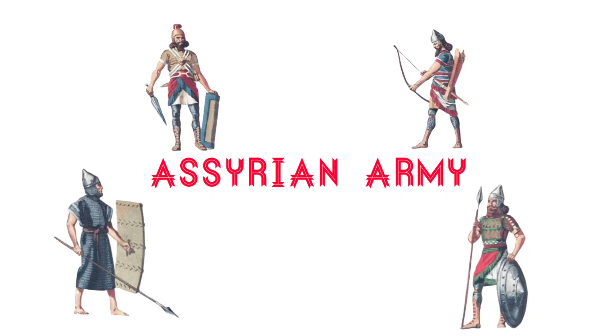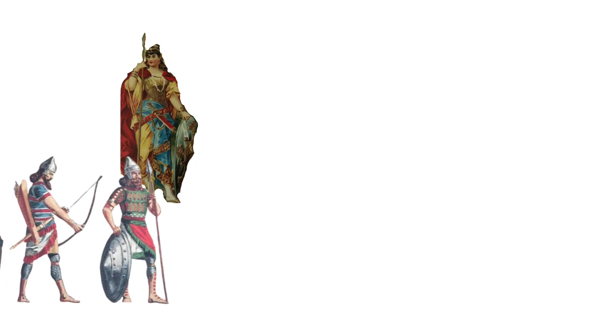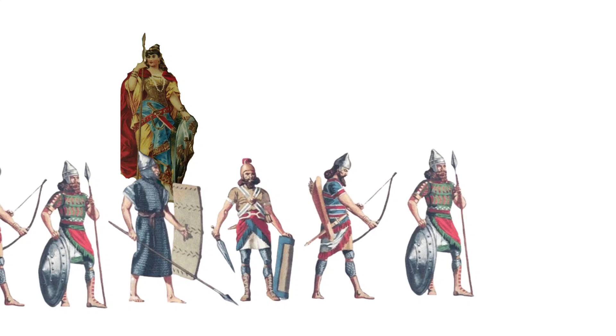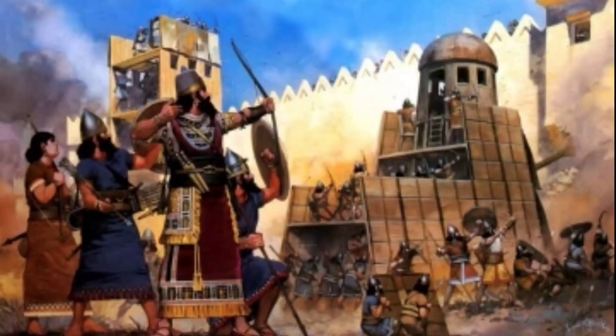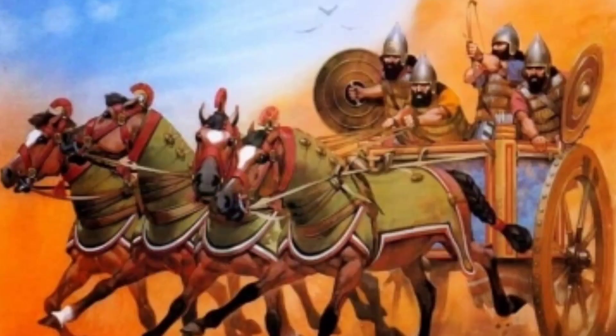According to what the Persians told the Greeks, Semiramis was preparing for her grand invasion of India for two years. Her army was as follows: three million foot soldiers, five hundred thousand horsemen, one hundred thousand chariots, and a hundred thousand camels covered with sewing skins of black oxen and fake movable trunks to imitate elephants. Her army total was three million seven hundred thousand — that is 37 lakhs. Historians have estimated the real number to be thirty thousand foot infantry, five thousand horsemen, one thousand chariots, and one thousand camels, making the total 37,000. The Assyrians were known for psychological warfare, being very brutal with their enemies, using siege equipment a lot, and their weapons were made of iron.